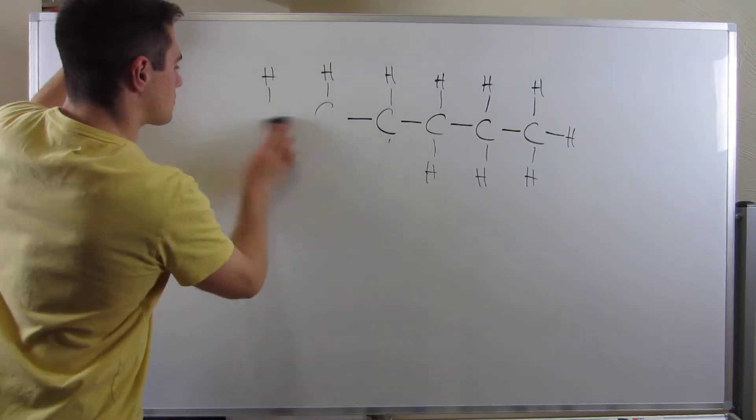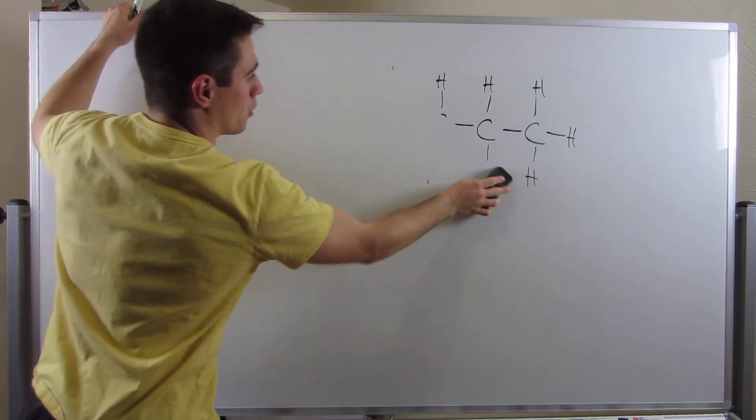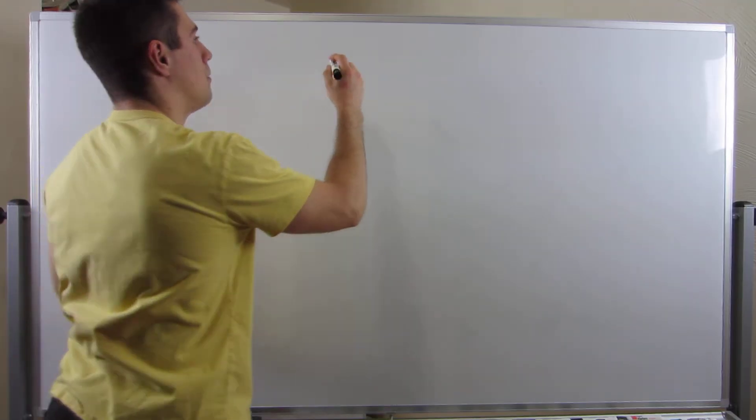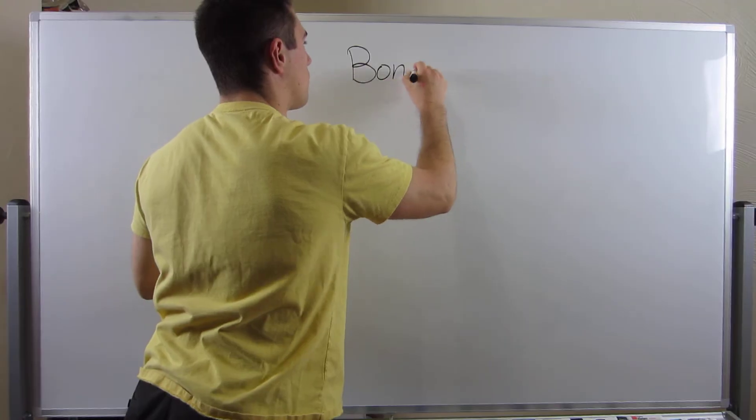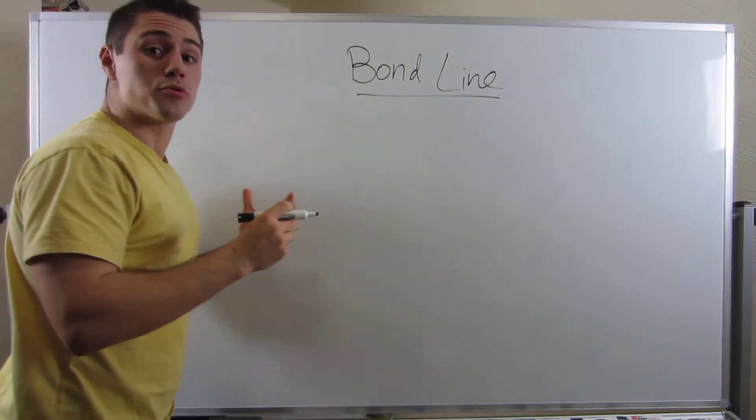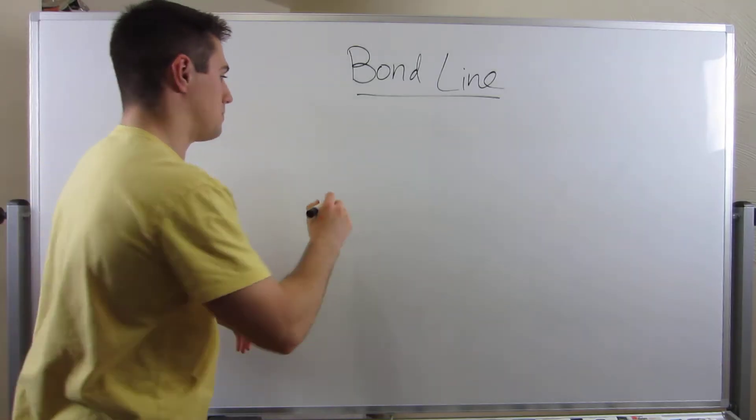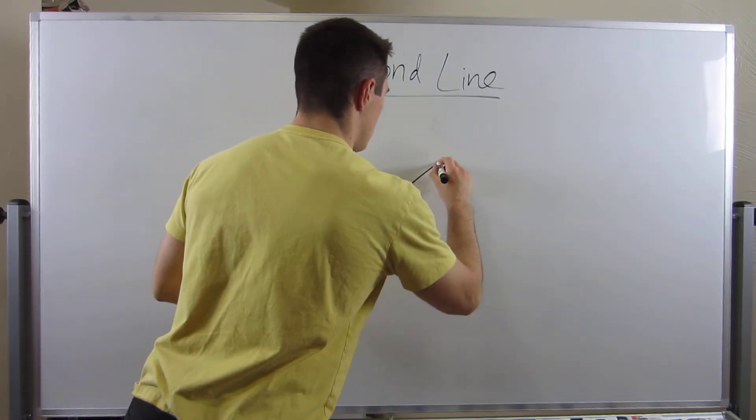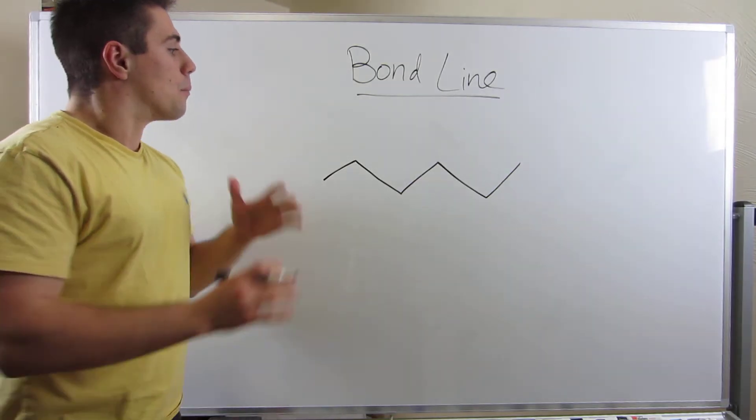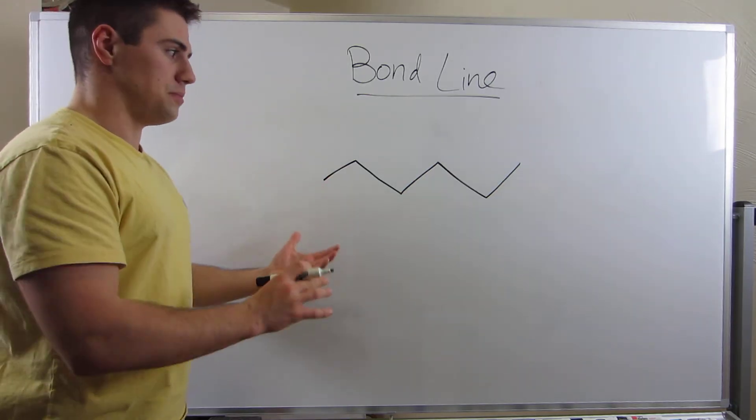Instead, instead of the Lewis dot form, the form we just drew, organic chemists use something called bond line. So if I was to draw that same structure again, it would look like this. Done. So much faster. But let's discuss what this actually means.